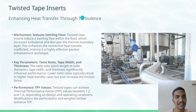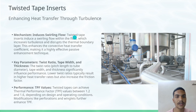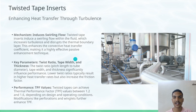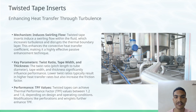The first technique is Twisted Tape Inserts. The twisted tape inserts induce a swirling flow within the fluid, which increases turbulence and disrupts the thermal boundary layer. Because of this, convective heat transfer is enhanced, and it is a very effective and most-researched technique in passive methods.